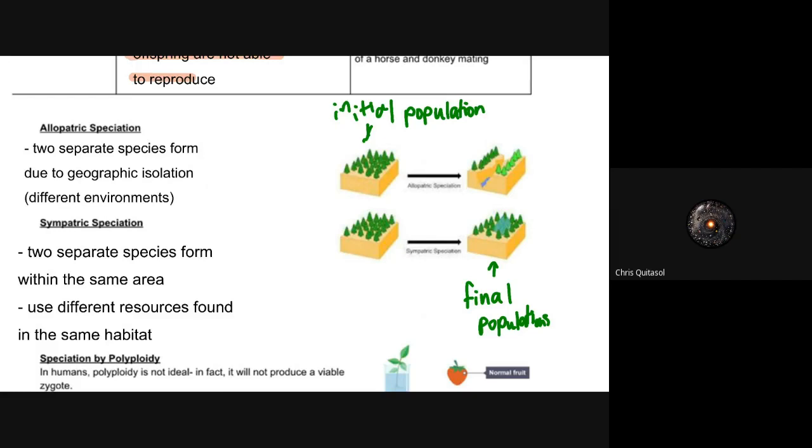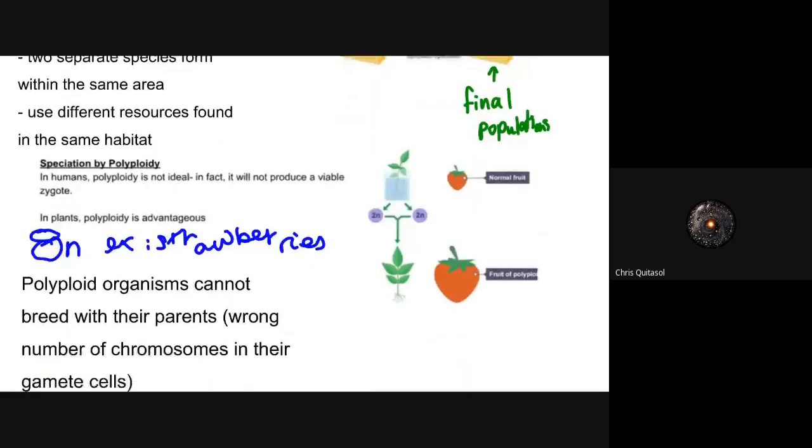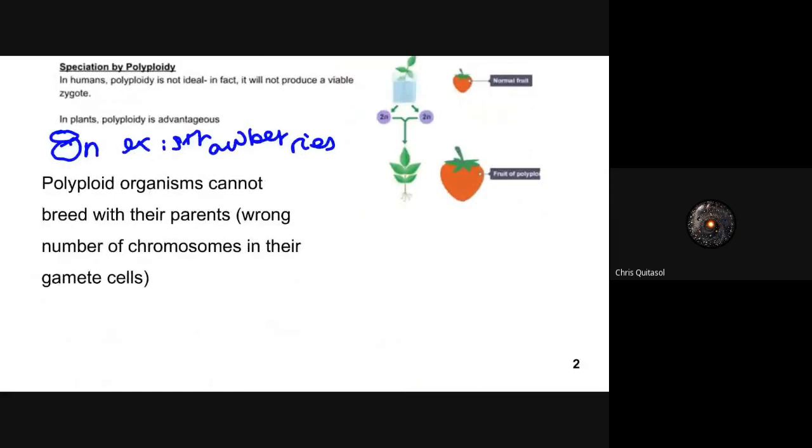Sympatric speciation is when two separate species exist within the same area but each uses different resources found in that habitat. One example is two types of hawks that use similar food but one hunts exclusively rabbits while the other hunts exclusively smaller birds. They pick different prey, have different resources, never stray into each other's resource wells, and can occupy the same area but utilize different resources.